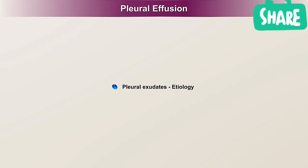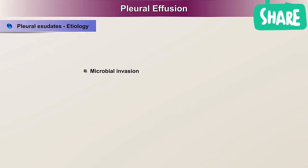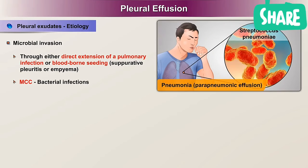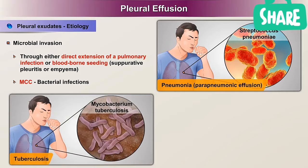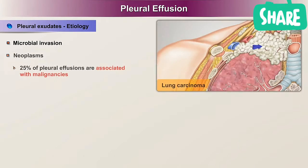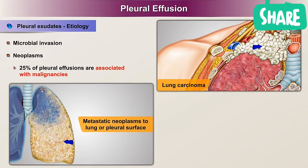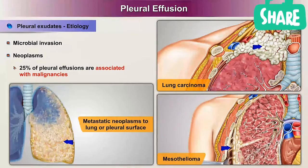Causes of pleural exudates include: microbial invasion through either direct extension of a pulmonary infection or blood-borne seeding, which is suppurative pleuritis or empyema — bacterial infections are the most common cause, with examples being pneumonia, parapneumonic effusion, tuberculosis, and pleural empyema. Neoplasms account for approximately 25% of pleural effusions, such as lung carcinoma, metastatic neoplasms to the lung or pleural surface, and mesothelioma.